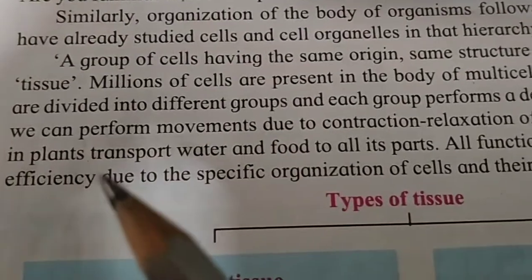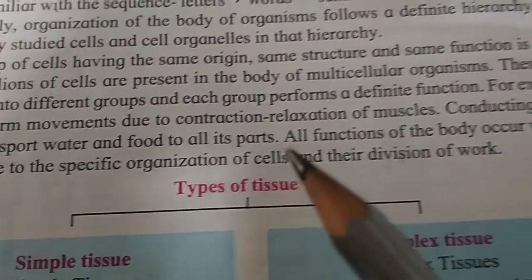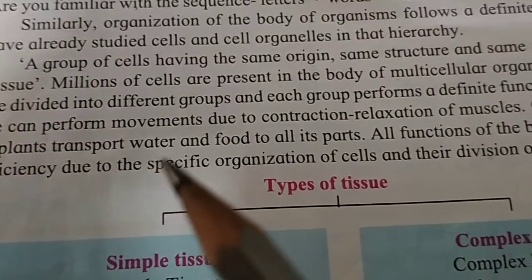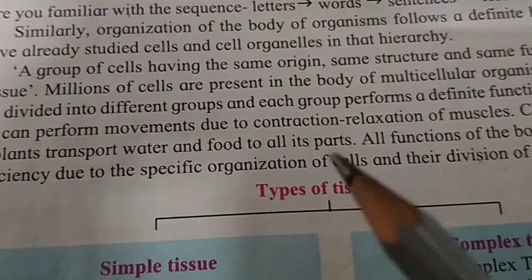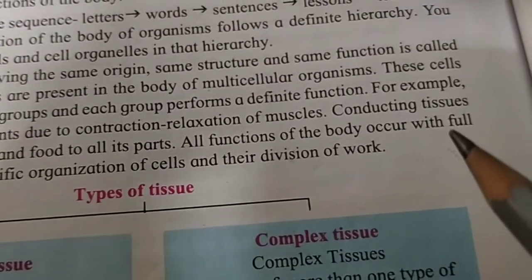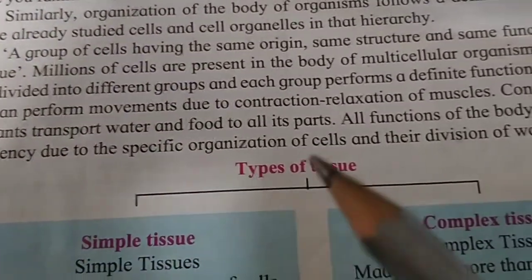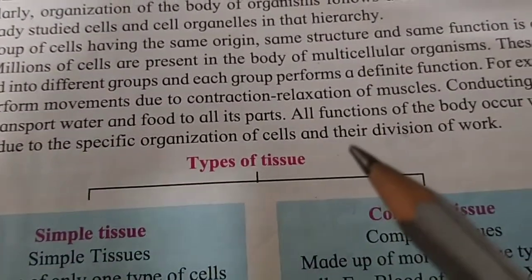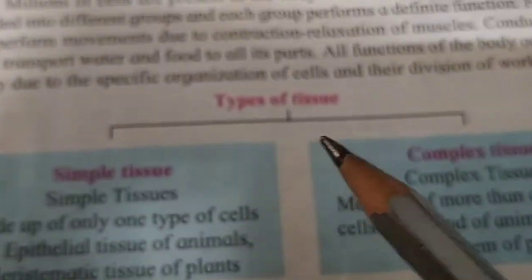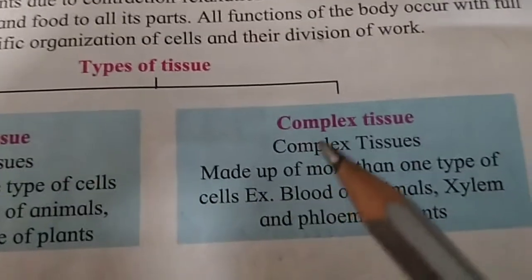Contraction and relaxation of muscles enables movement. Conducting tissues in plants transport water and food to all their parts. All functions of a body occur with full efficiency due to the specific organization of tissues and their division of work. Tissues are of two types: simple tissue and complex tissue.